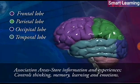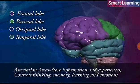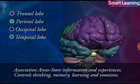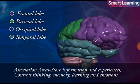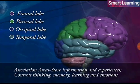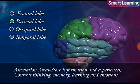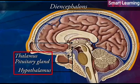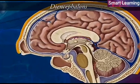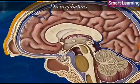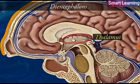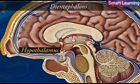Each lobe has some areas called association areas, which store information and experiences and control thinking, memory, learning, and emotions. The third part of the forebrain is the diencephalon. It is the posterior part of the forebrain that connects the midbrain with the cerebral hemispheres and contains the thalamus and the hypothalamus.